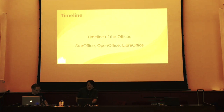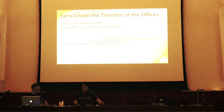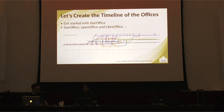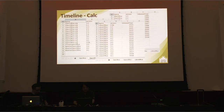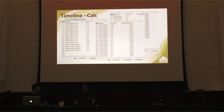Let's look at the timeline. This is a famous timeline of the office suites. I chose some data from StarOffice, OpenOffice, and LibreOffice. This is simple data of the timeline: name, OpenOffice, and sometimes LibreOffice and NeoOffice. Versions from 1.1 to 4.1, and reference 3.3 to StarOffice. StarOffice is here — this is the data.